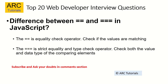What is the difference between == and === in JavaScript, also known as equality check and strict type check? Double equals (==) is the equality check operator — it checks if the values are matching on both sides. Triple equals (===) stands for strict type checking as well as equality check, meaning it checks both the value and the data type of the comparing elements.